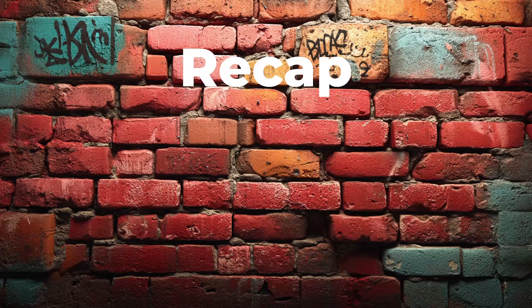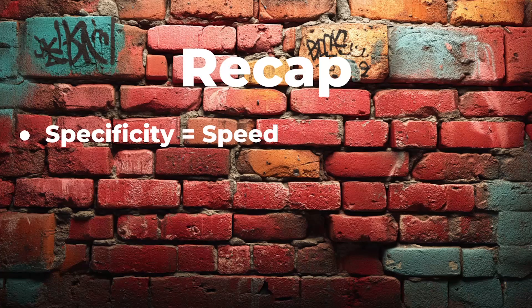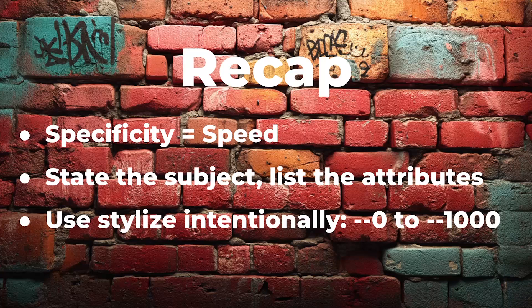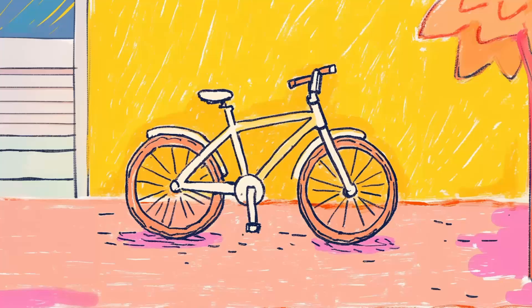Let's recap. We learned that specificity equals speed — have really good prompts that dial in exactly what you want. Don't use the gobbledygook from ChatGPT. State the subject and list the attributes; that's the easiest way to get where you want to go. Then stylize intentionally: the range is zero to a thousand. Closer to zero is exactly what the prompt says; closer to a thousand you get much more creative results. The sweet spot is 500. Try optimizing one of your old prompts with today's tips and post it in the comments.